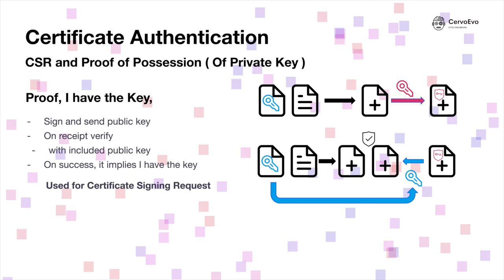To verify, you perform the same hash operation on the data to produce the fingerprint. Then, using the public key, you decrypt the pre-computed data and compare the two fingerprints — the one you calculated with the one that was decrypted. If they match, we can say the data has not been altered since it was signed. So now that we have signature verification, we can move to something called proof of possession. This proves that you have the private key that matches the public key you sent to someone. The data used is the public key itself — there is no need to send the key because the key is the document itself.